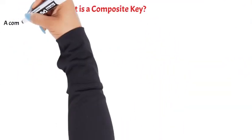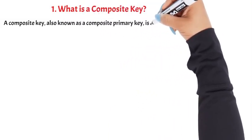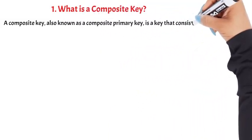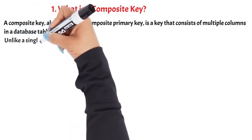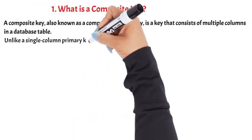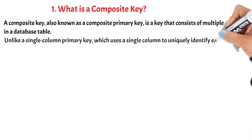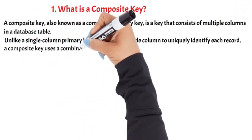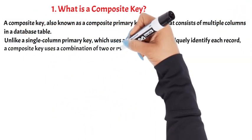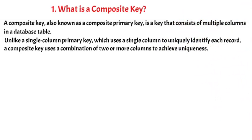A composite key, also known as a composite primary key, is a key that consists of multiple columns in a database table. Unlike a single-column primary key, which uses a single column to uniquely identify each record, a composite key uses a combination of two or more columns to achieve uniqueness.